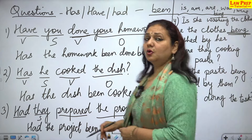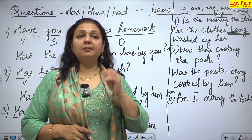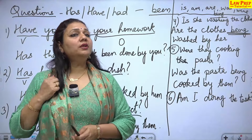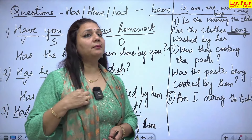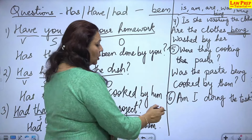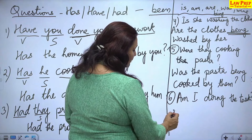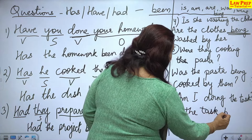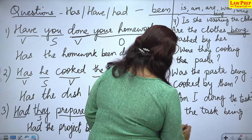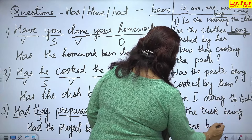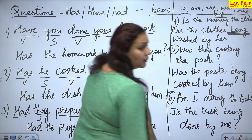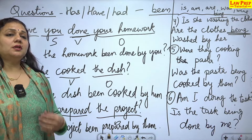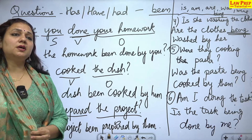'Am I doing the task?' — 'am' is the helping verb; when the object comes first, 'am' changes to 'is' because 'task' is singular. Answer: 'Is the task being done by me?' Any question, doubt, or controversy — you are most welcome to ask.